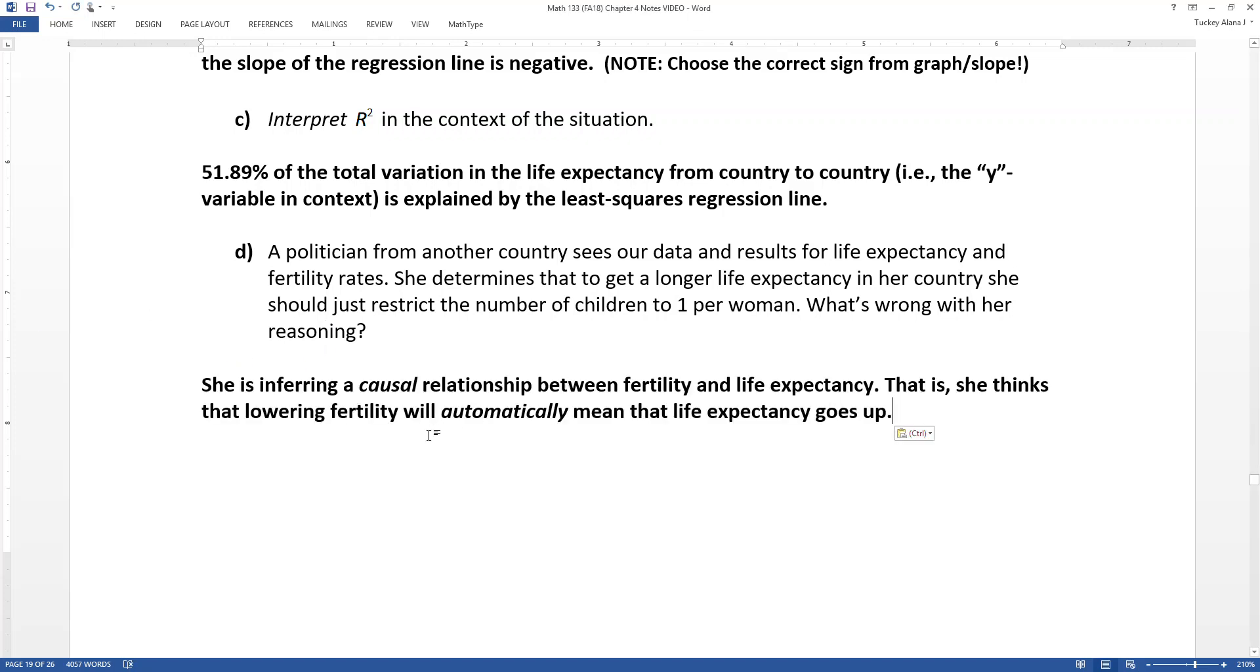So she's inferring a causal relationship between fertility and life expectancy. She's implying that one thing will automatically change the other. That's how algebra works. That's not how statistics works. Not unless you have a designed experiment, which we do not have.